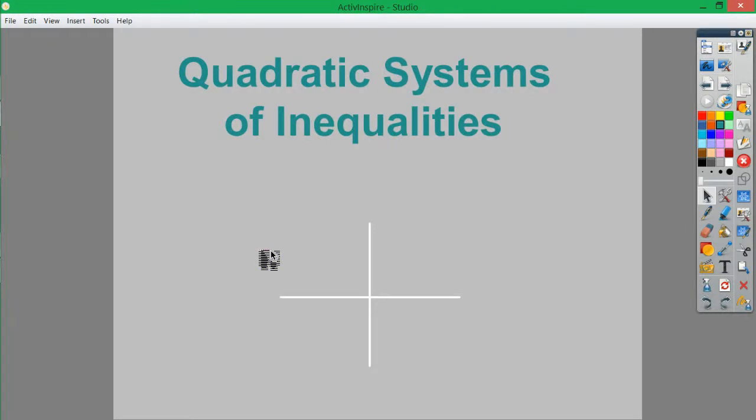A system of inequalities problem generally refers to having two linear inequalities that you've probably seen before. You'd have one line here, and maybe it was shaded down.